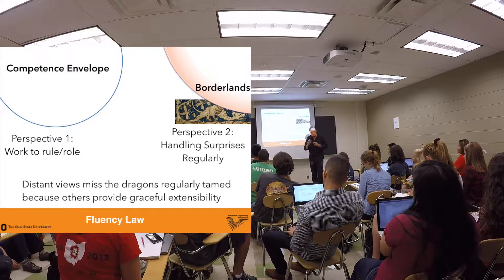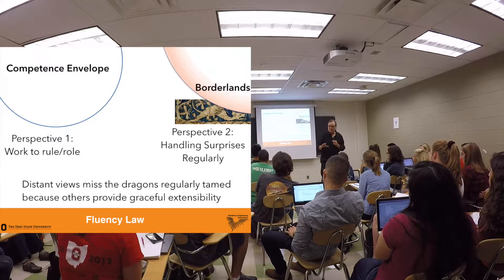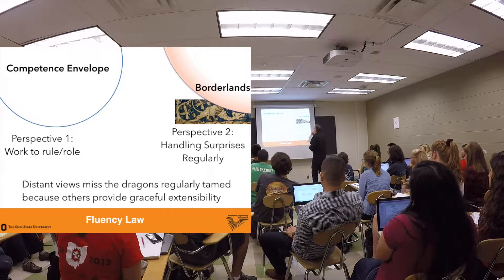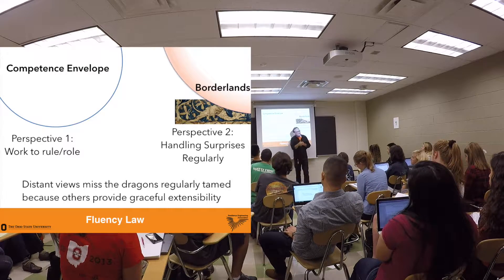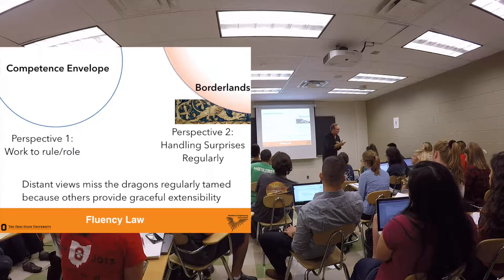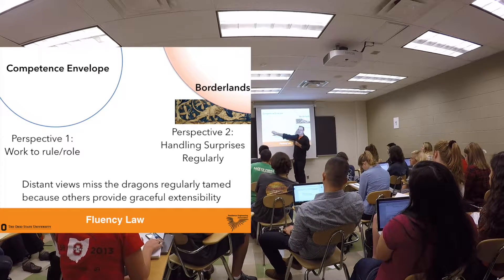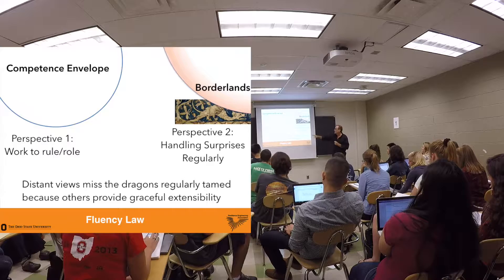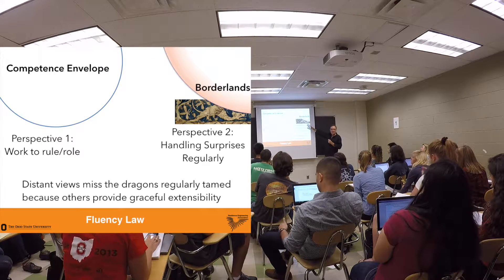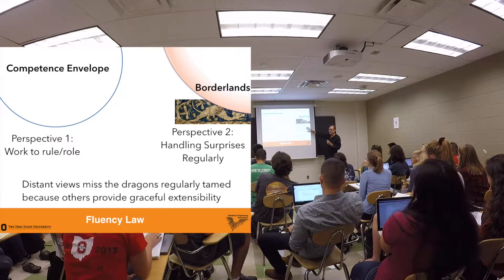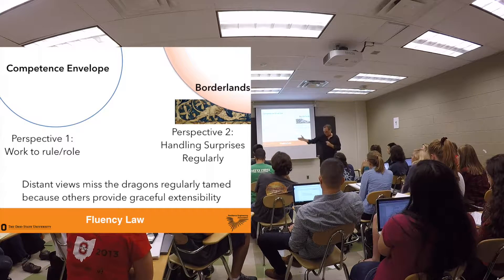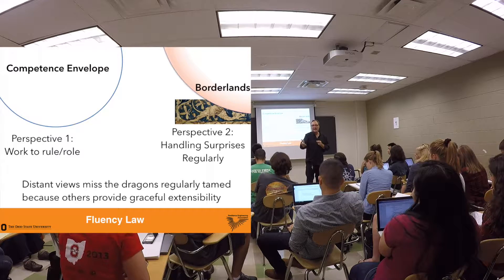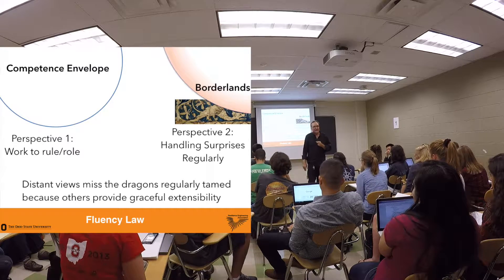Now I want you to understand the difference between why a compliance perspective can so quickly miss the need for graceful extensibility near the boundaries — miss the way dragons of surprise show up. Perspective one says: I've got a great competence envelope, it's been getting better — faster, better, and cheaper. I've got a great quality record, fewer safety incidents. Everything looks better. Their idea: work to role, work to rule. Perspective two, closer to the sharp end — what do they do? They're handling dragons all the time. From their point of view, surprise occurs regularly. So I walk in and talk to an ER doc — Shawna — and I ask: how many shifts before you have an event that challenges your expertise as a great ER doc? And Shawna just laughs and says: last night.